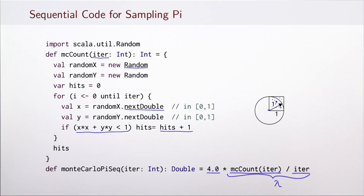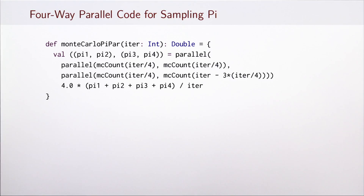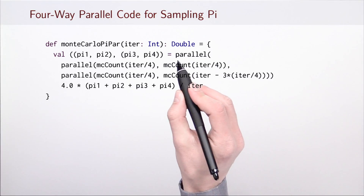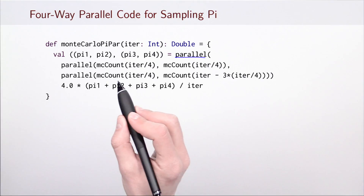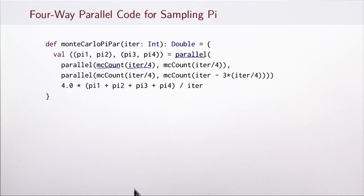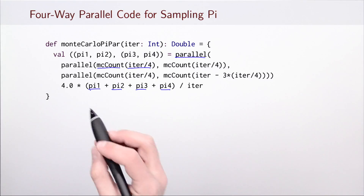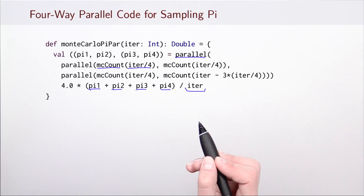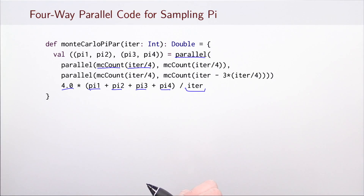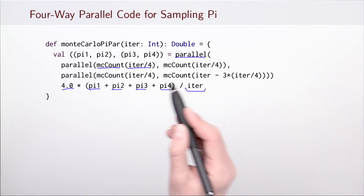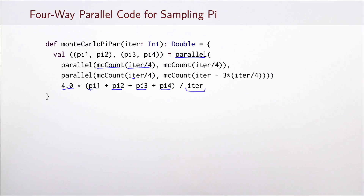Now let's look at how we would parallelize this kind of code. Here's the parallel version of computing the same estimate. I'm using the parallel construct to simultaneously count these estimates for one quarter of the iterations. Once I get these counts, I can simply add them up, divide by the total number of iterations, and multiply the value by 4. All four computations proceed in parallel and do not really have much of a shared resource since they are all proceeding independently.